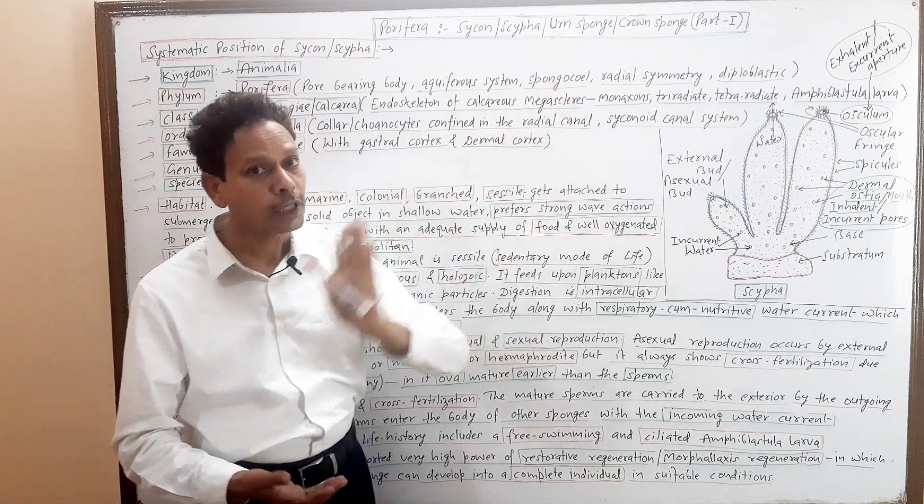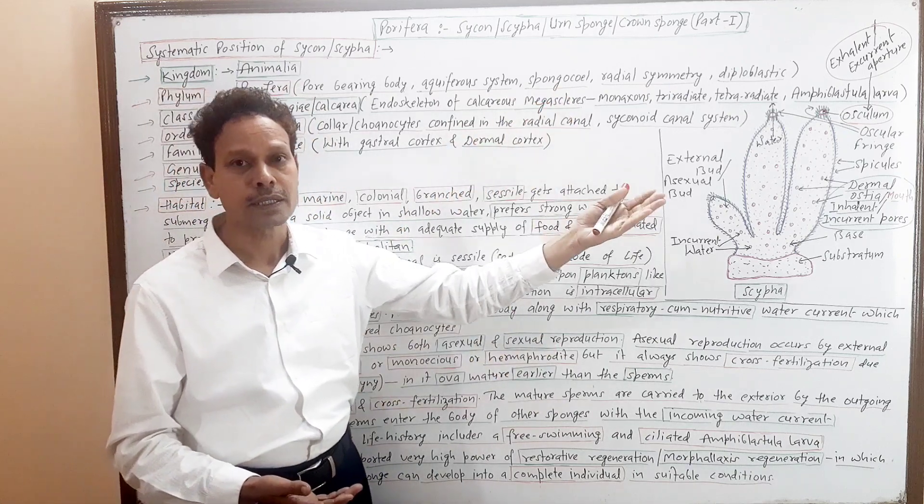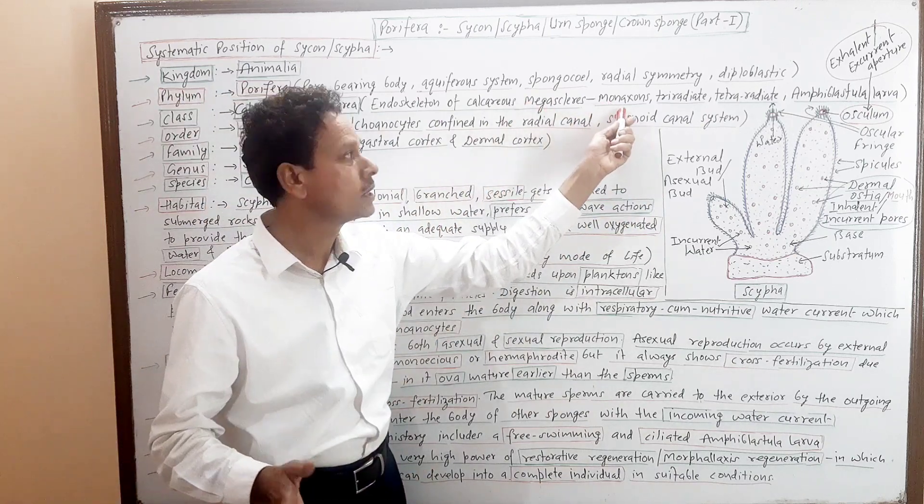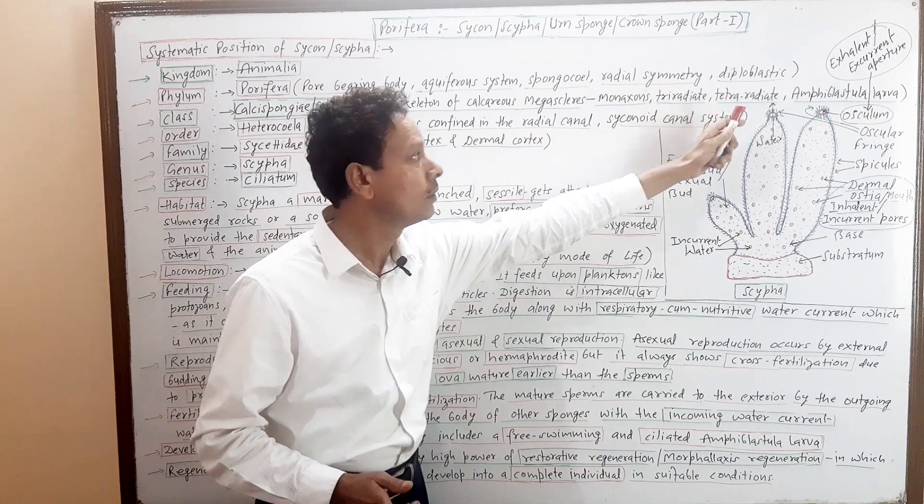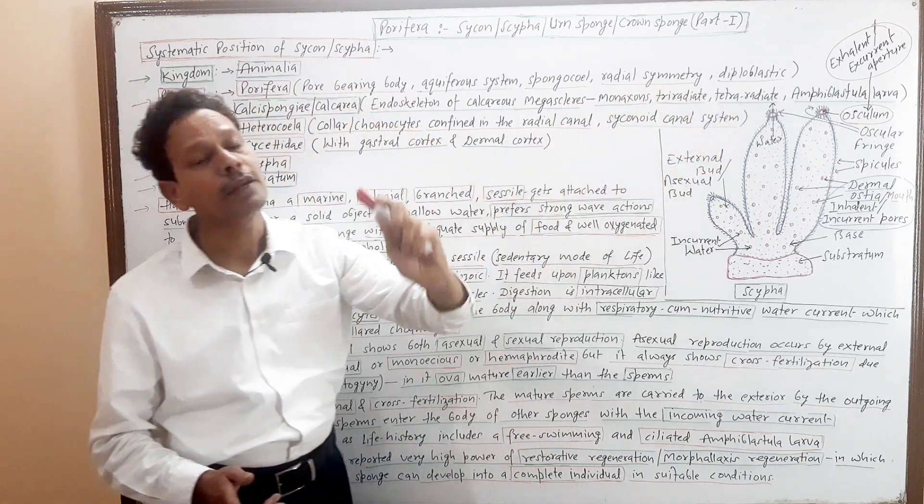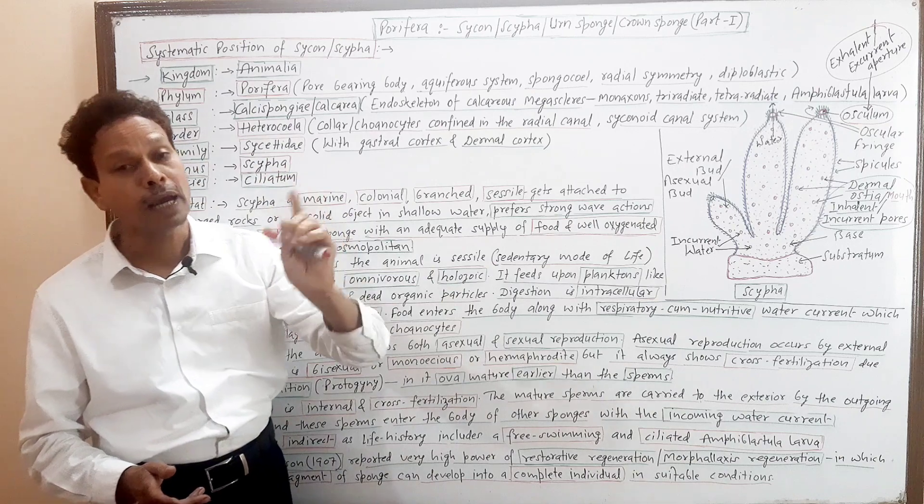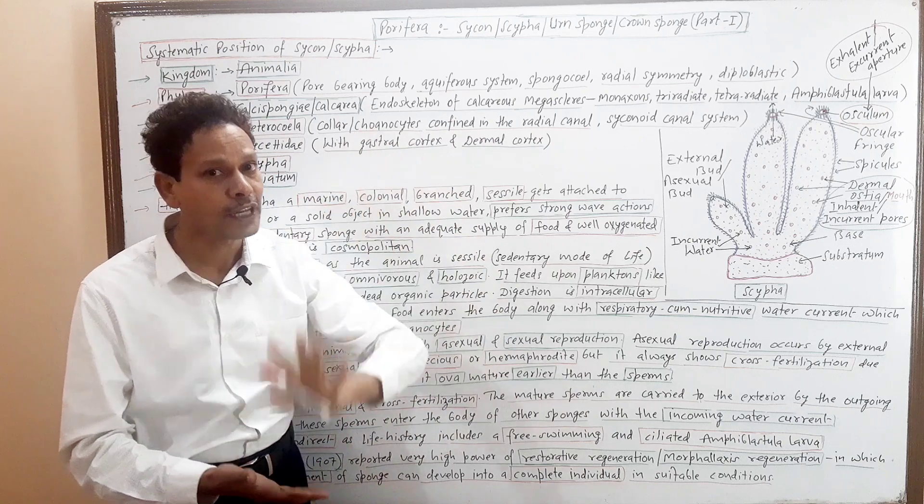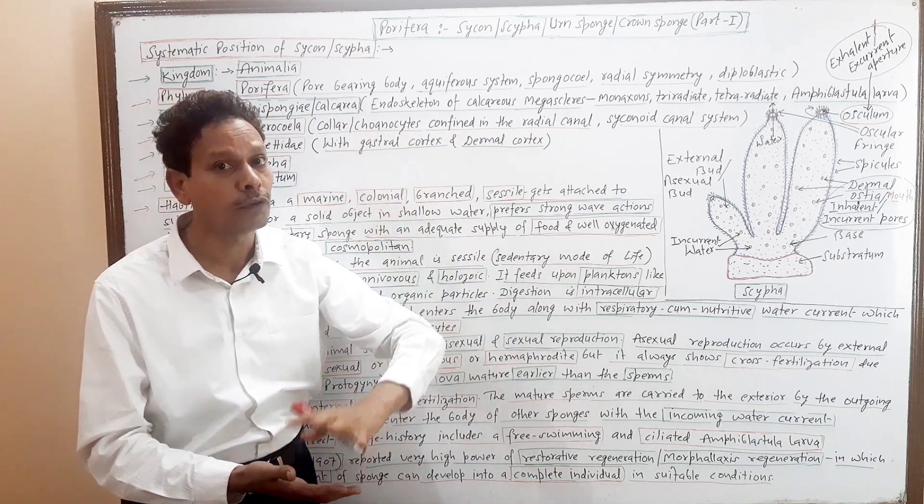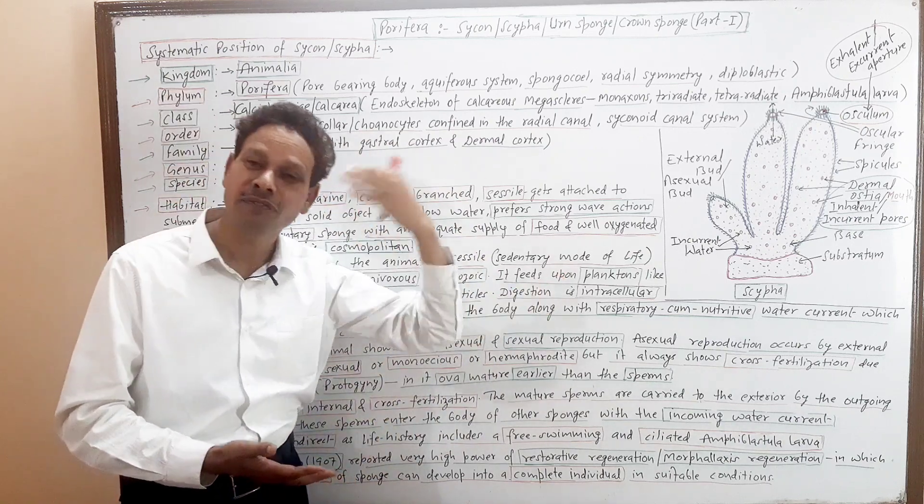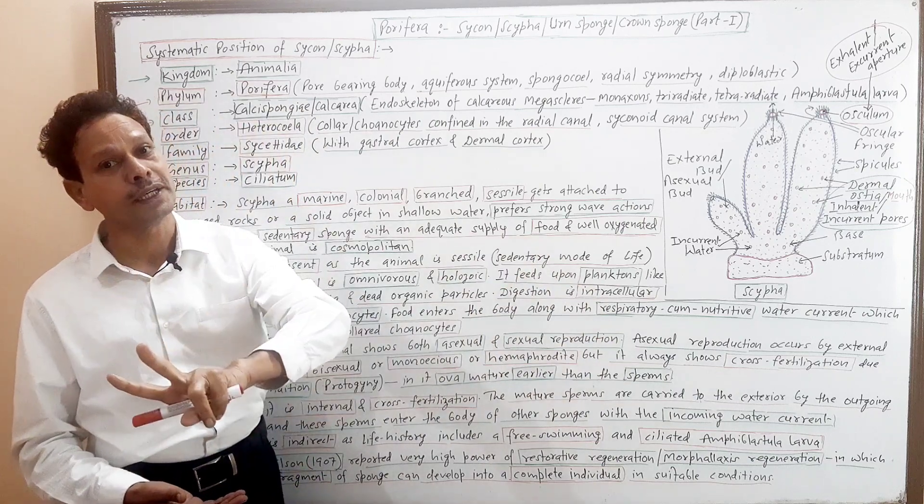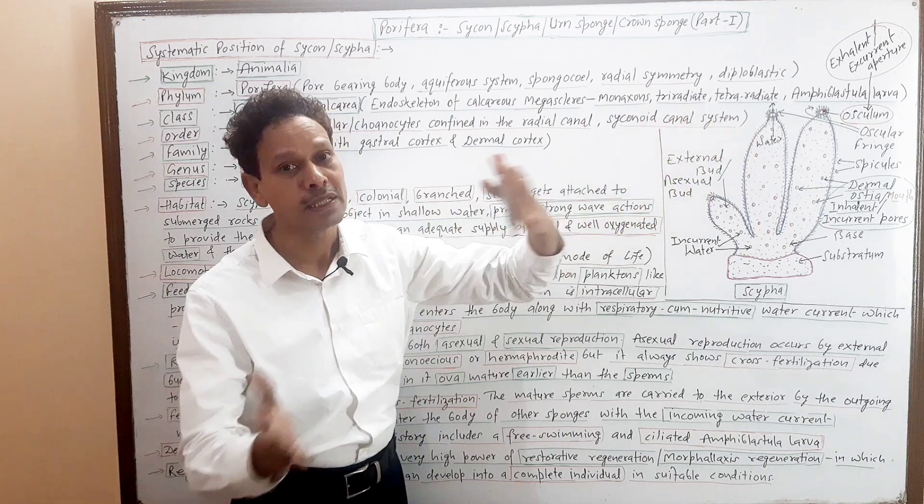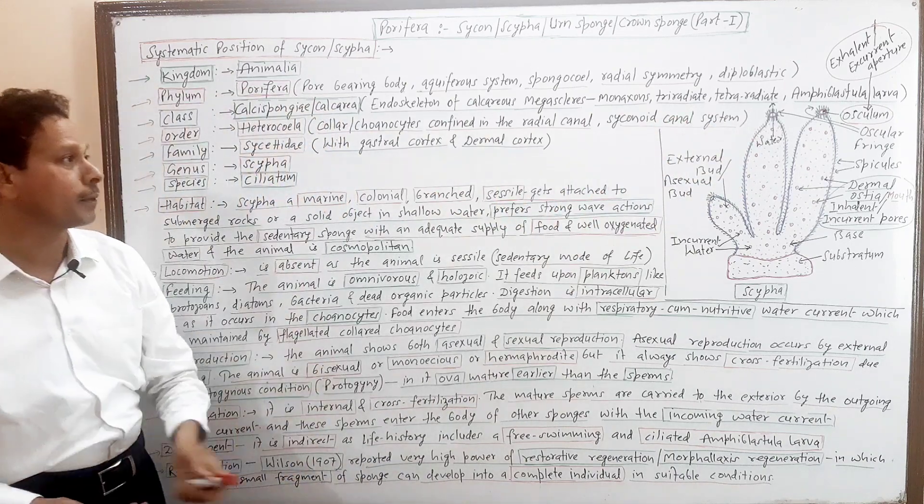Class Calcispongiae, that is Calcarea, means the spicules, the endoskeleton is made up of calcium carbonate. The spicules are megascleres - note this students - not microscleres. All spicules are calcium carbonate, calcareous megascleres. These spicules are monoaxon, triradiate, and the larva - very important - that is amphiblastula larva.